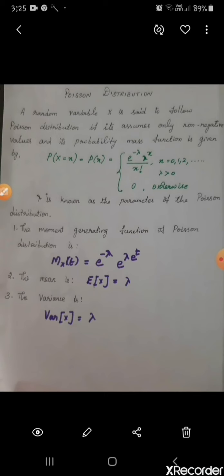First we see what is the definition for Poisson distribution. A random variable x is said to follow Poisson distribution if it assumes only non-negative values and its probability mass function is given by P(x) = e^(−λ) · λ^x / x!, where x takes values from 0 to infinity and λ is a positive number greater than 0. Otherwise P(x) is 0.